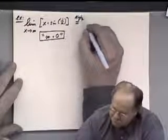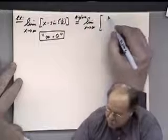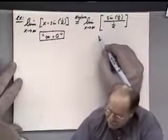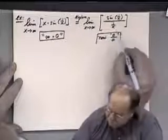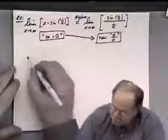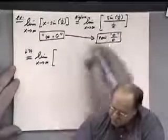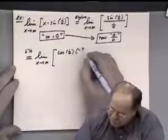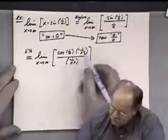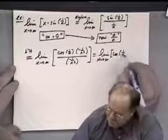Applying L'Hôpital's rule: derivative of sine of one over x is cosine of one over x times minus one over x squared; derivative of one over x is also minus one over x squared. Those cancel, leaving the limit as x goes to infinity of cosine of one over x. As x goes to infinity, one over x goes to zero, so this limit is cosine of zero, which equals one.